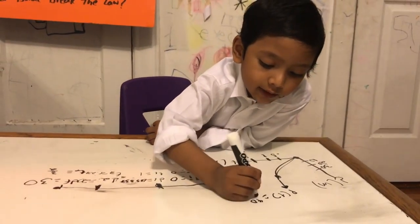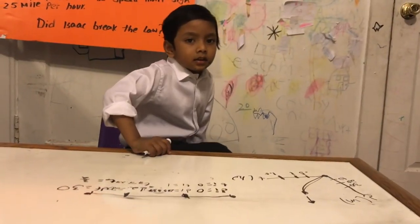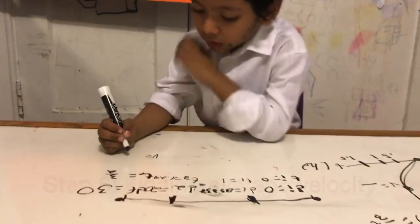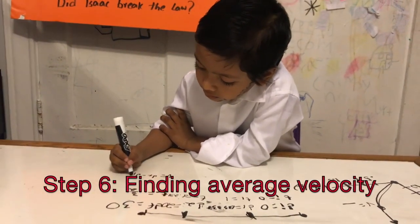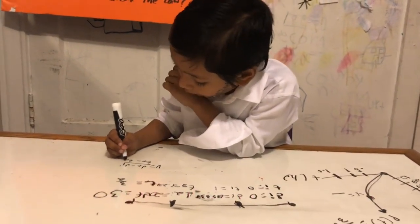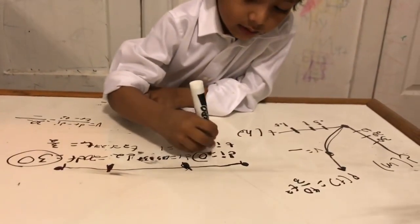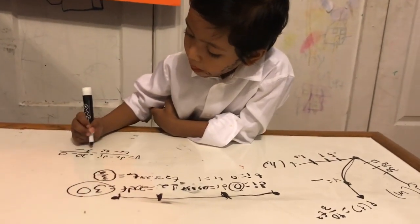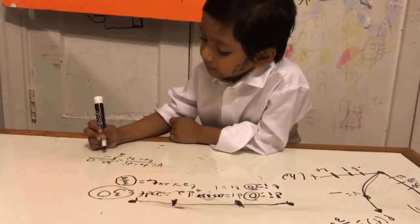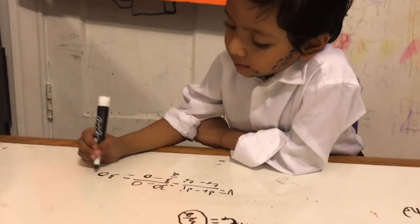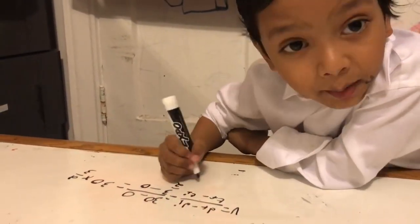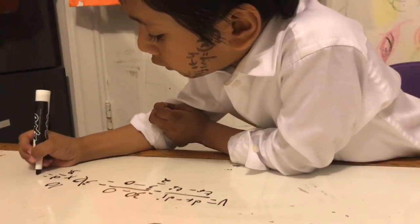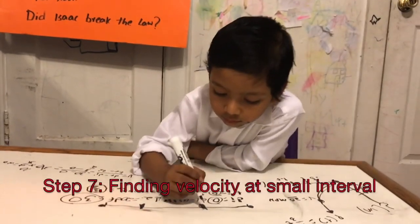p(t) equals 40 over 3t squared. The name of the line is velocity. So we have to find velocity right here. Velocity is equal to d-final minus d-initial over t-final minus t-initial: 30 minus 0 over 3/2, which equals 30 times 2 over 3 because we flip it. So 10 times 2 equals 20. Velocity equals 20.